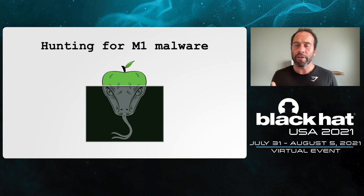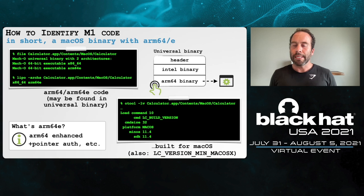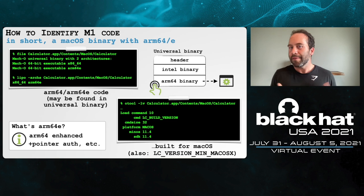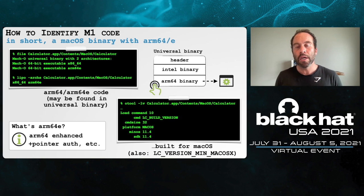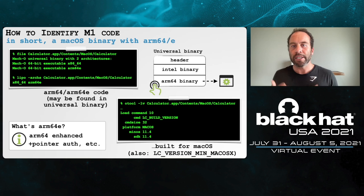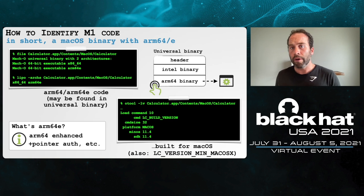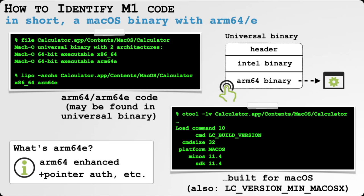Now let's talk about hunting for M1 malware in the wild. First, how do we identify natively compiled M1 code? It's going to be a Mac binary containing ARM64 or ARM64E code. We can use the file utility to show the architectures a binary supports — for example, running it on Apple's Calculator application shows it's a universal binary containing code that runs natively on both Intel and ARM. We also use the otool command to look for load commands specifying the platform it was built for — confirming Calculator was built to run on macOS.